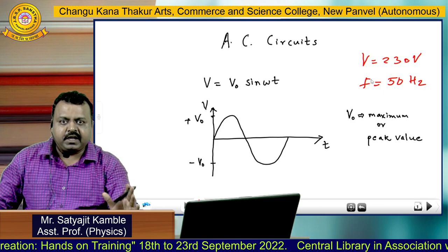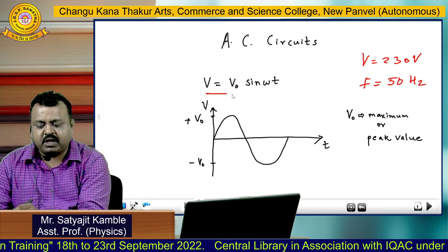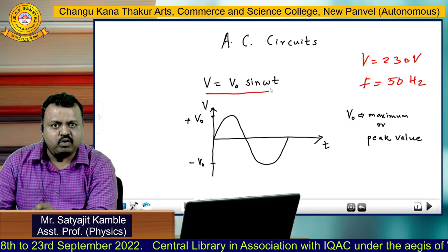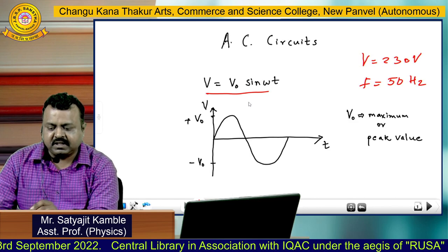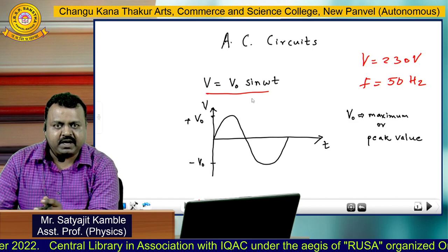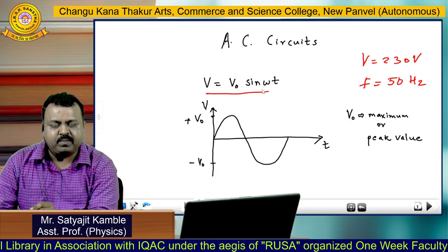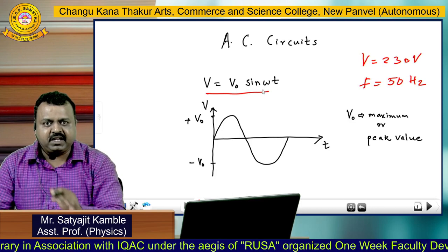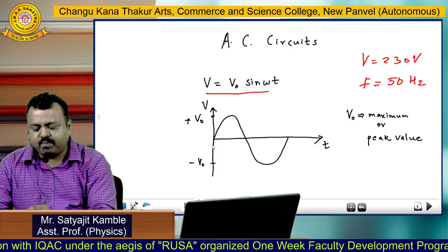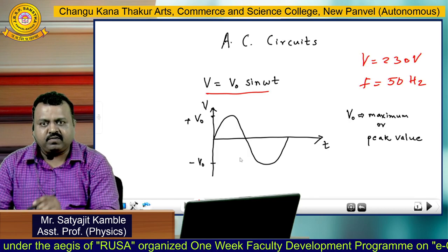Now, alternating means fluctuating. This is the expression for alternating voltage: V equal to V naught sine omega t. In this expression, a sine of an angle is present, and as you know, if we change the time t, then sine of an angle will fluctuate between 0 to 90, and accordingly your AC voltage is also going to fluctuate between positive value and negative value.